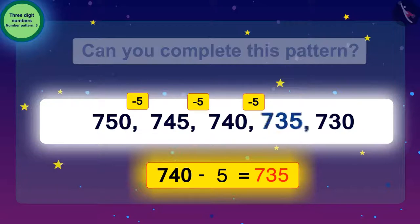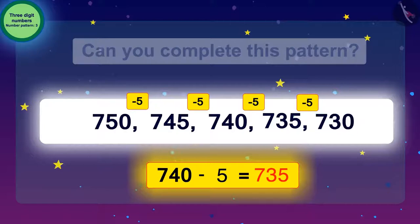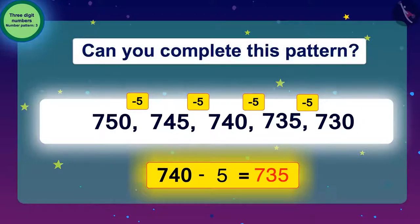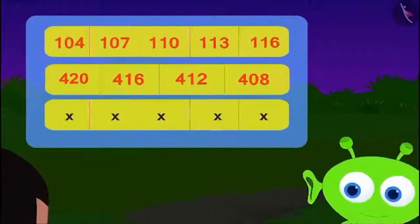Look carefully. If we subtract 5 from 735, we get 730, which is already given. Children, could you also identify the pattern?